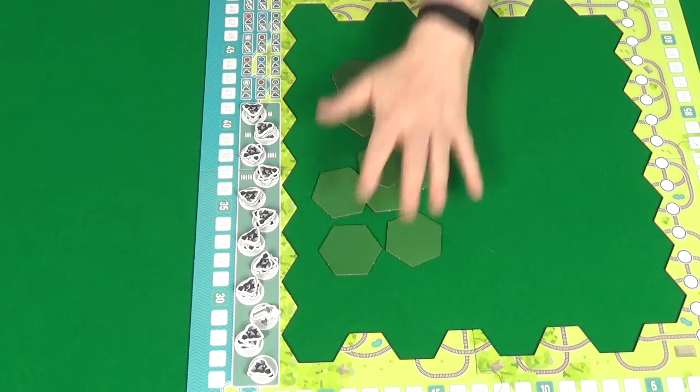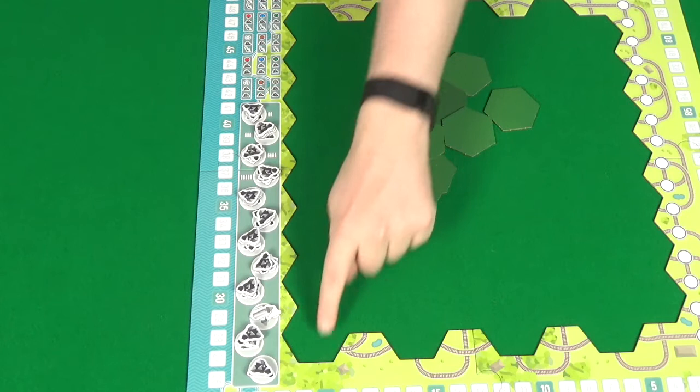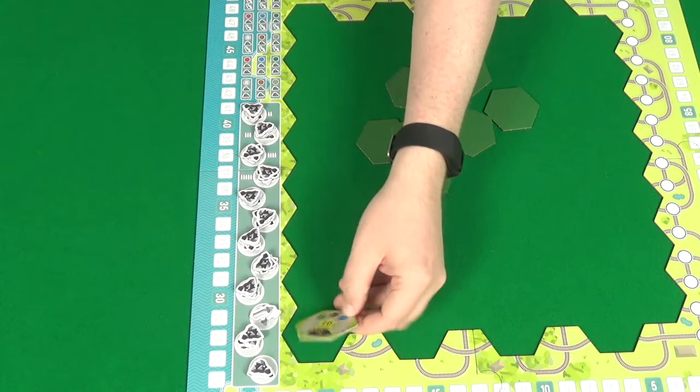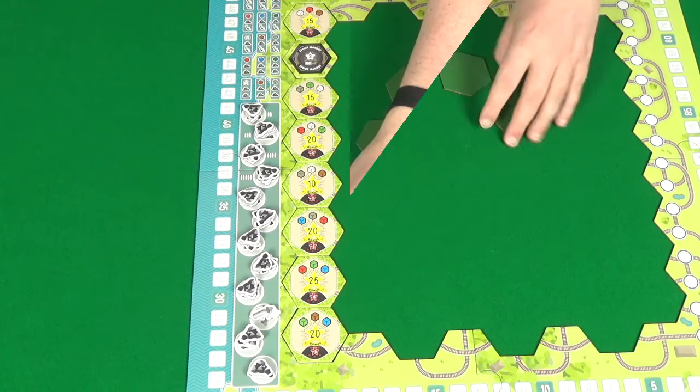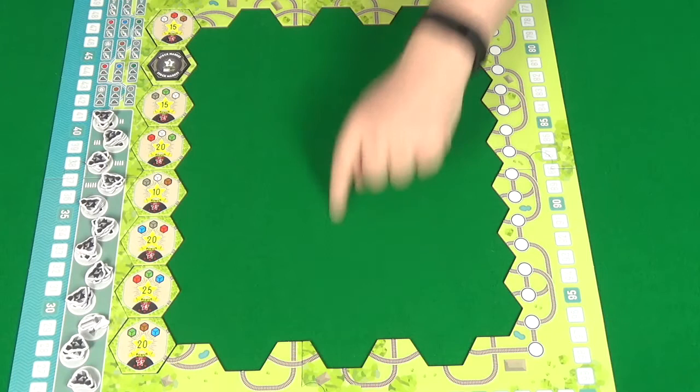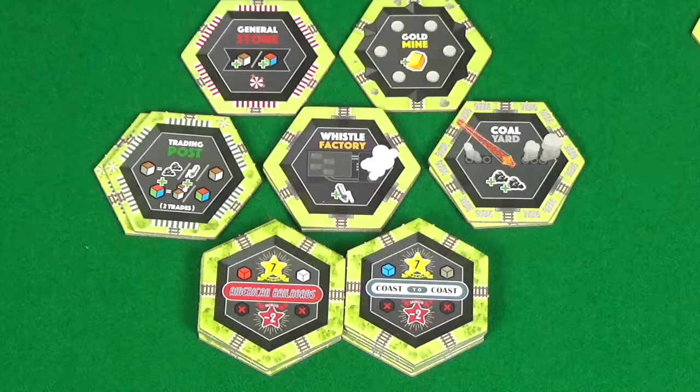Next, shuffle up all the hex tiles that have this dark green background, and then place one in each of these spaces along the leftmost side of the board. You'll place these so that their tracks point towards the rest of the board. Then the remaining tiles you'll return to the box. We then want to fill this fourth column from the right, which is roughly the middle of the board.